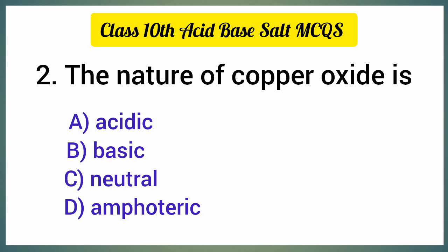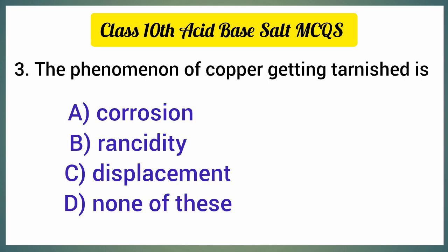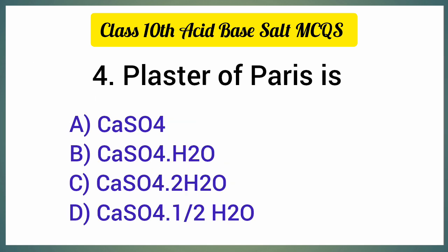The phenomenon of copper getting tarnished is — the correct option is option A, corrosion. Plaster of Paris is — the correct option is option D, CaSO₄·½H₂O.